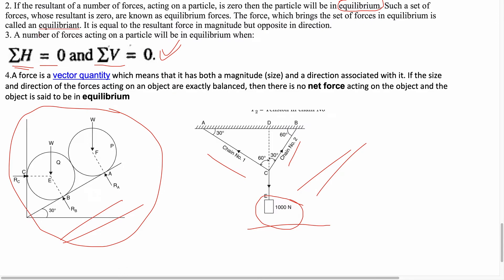This is an important point: a number of forces acting on a particle will be in equilibrium when summation H equals zero and summation V equals zero. If the resultant of a number of forces acting on a particle is zero, the particle is in equilibrium. Such a set of forces whose resultant is zero are known as equilibrium forces. The force which brings a set of forces into equilibrium is called the equilibriant.